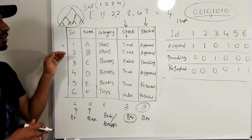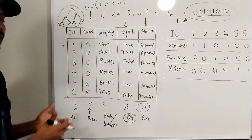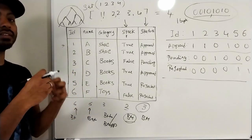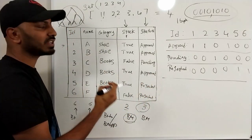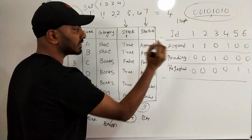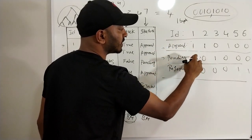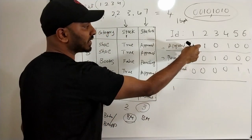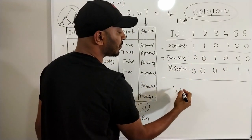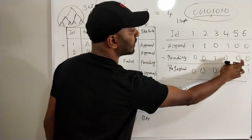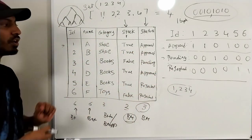Now for a more complex query: find all rows where status is approved OR pending. We use a bitwise OR operation on the approved bitmap and the pending bitmap. OR-ing bit by bit: rows 1, 2, 3, and 4 all result in 1 (rows 1, 2, 4 from approved; row 3 from pending), while rows 5 and 6 remain 0. So the answer for that query is rows 1, 2, 3, and 4.